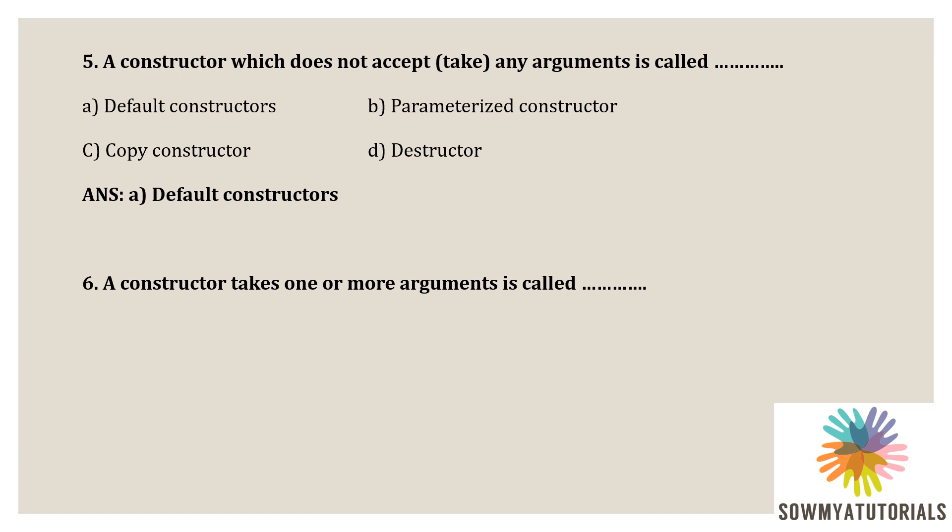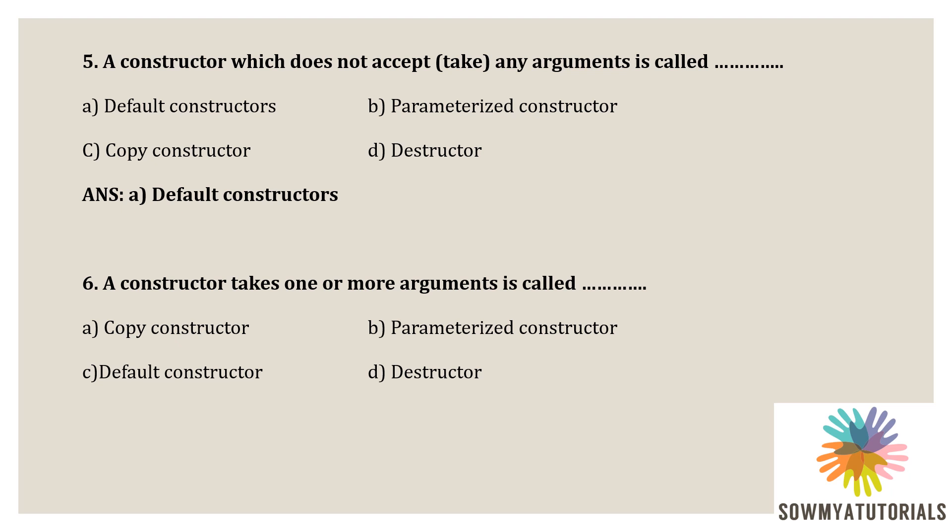Next question: a constructor that takes one or more arguments is called what? Options: A) copy constructor, B) parameterized constructor, C) default constructor, D) destructor. A constructor that takes one or more arguments is called a parameterized constructor. Using this constructor, it is possible to initialize different objects with different values. The correct option is option B, parameterized constructor.